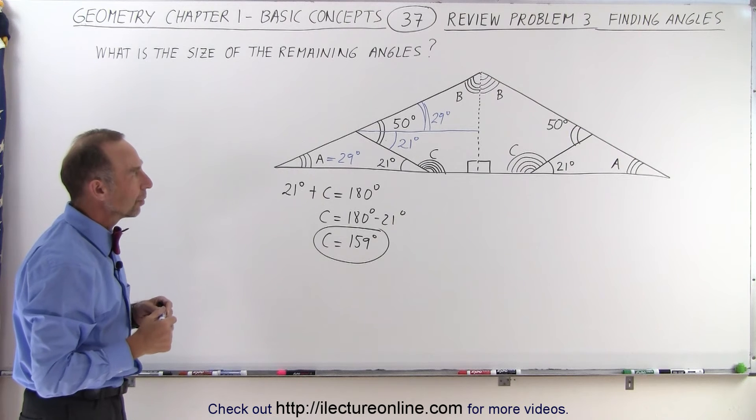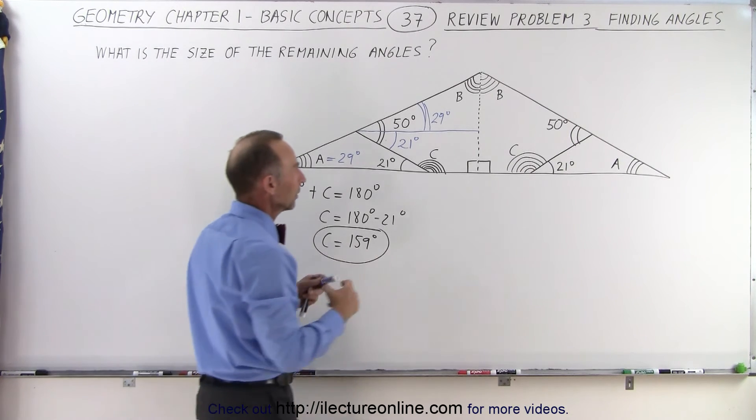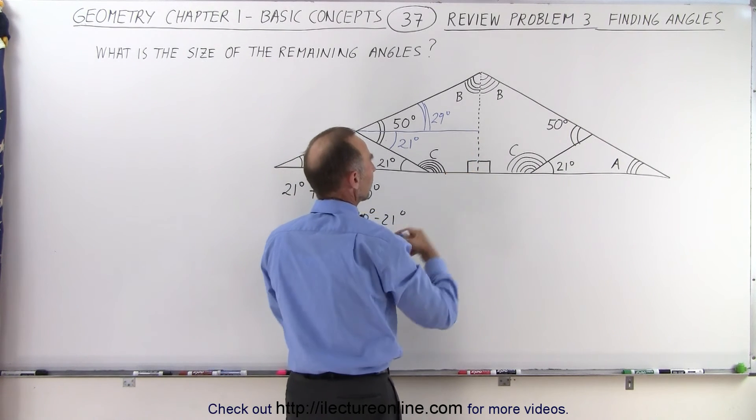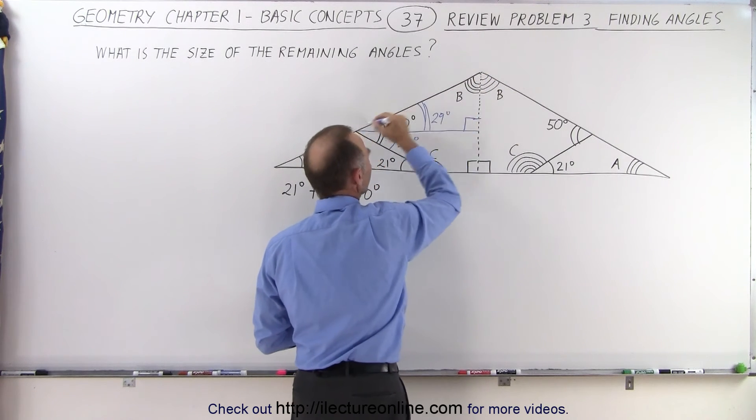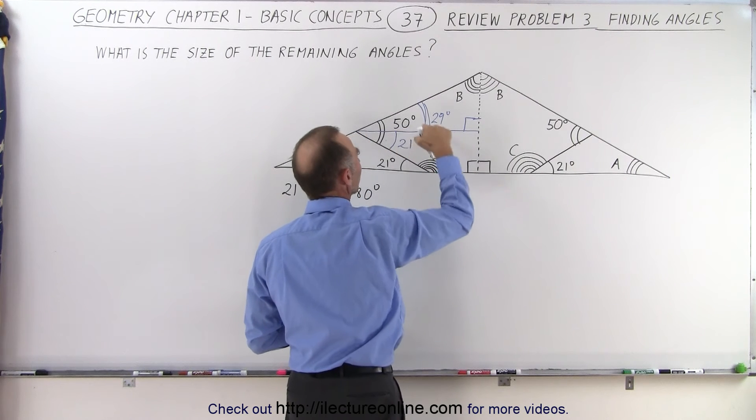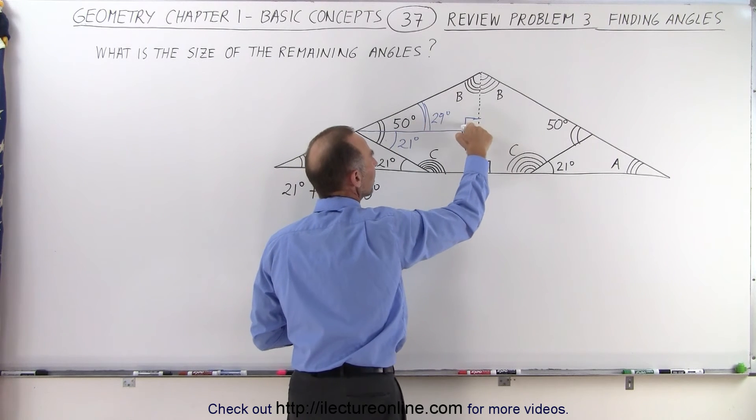So now we need to find angle B. Well, since this is parallel to this, we could say that this is a 90 degree angle. And if we take this triangle right here, we have a 29 degree angle, we have a 90 degree angle, and we have the angle B.